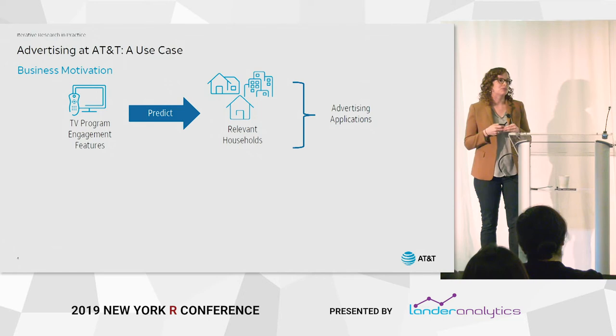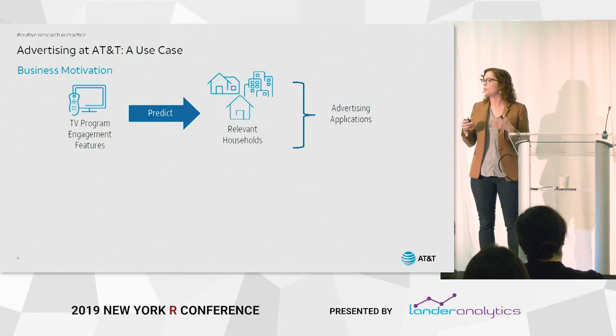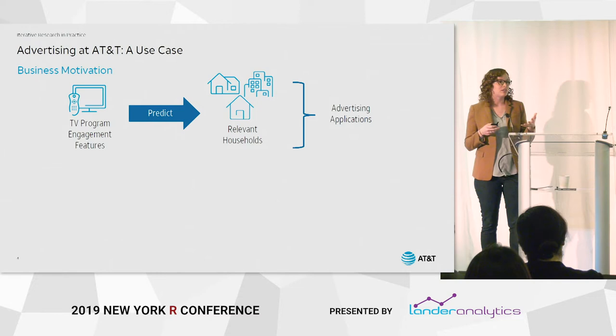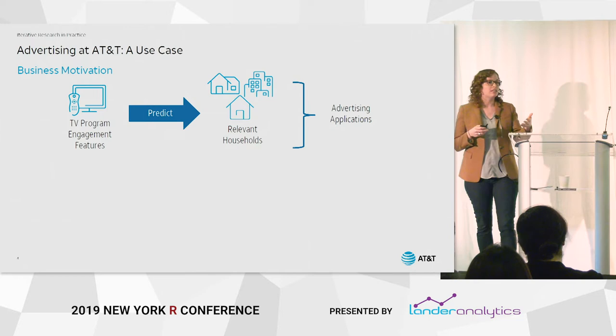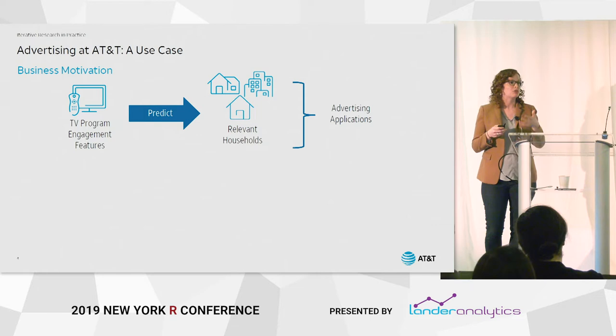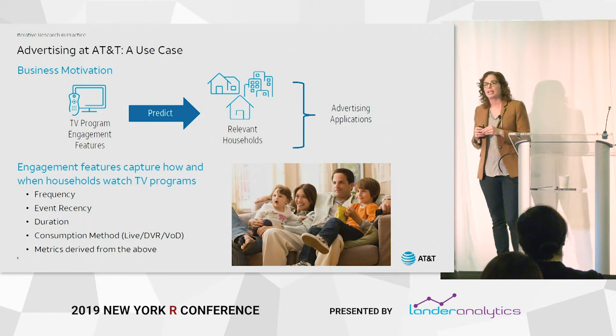What we're doing here is using TV program engagement features gathered from the return set-top box data — features that tell us how and when people are watching and how engaged they are with programs. We use that to predict an advertiser's relevant audience. Once we're able to predict their relevant audience, we can infer what we know about their viewing to recommend specific shows or programs for linear ad buys. That's the goal.